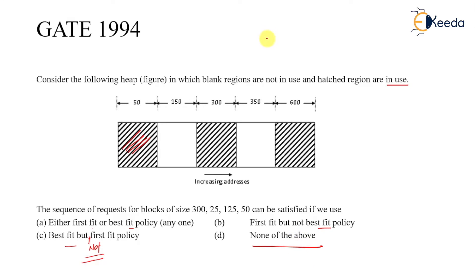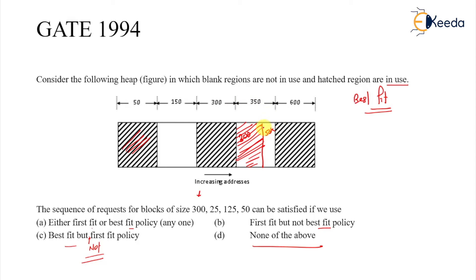We have two policies: first fit and best fit. Let's apply the best fit method here. When 300 comes, best fit allocates it here, leaving 50k. Then 25 comes and best fit allocates it in the 25k space, leaving another 25k.